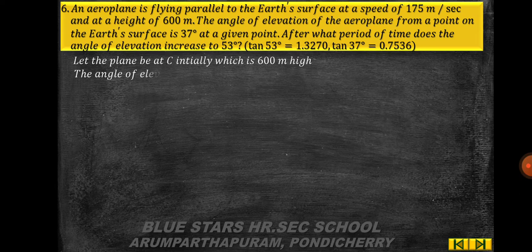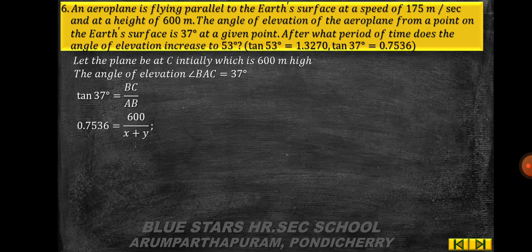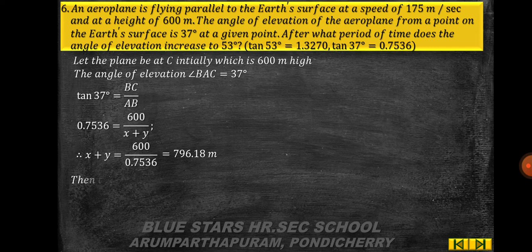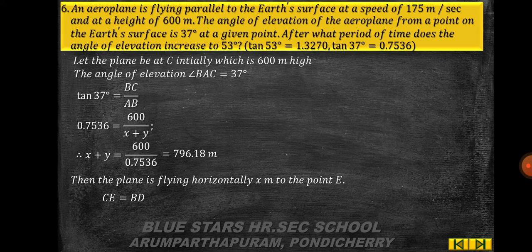Let the plane be initially at C, height 600 m, with angle of elevation ∠BAC = 37°. tan 37° = BC/AB, so 0.7536 = 600/(x + y), giving x + y = 600/0.7536 = 796.18 meters.